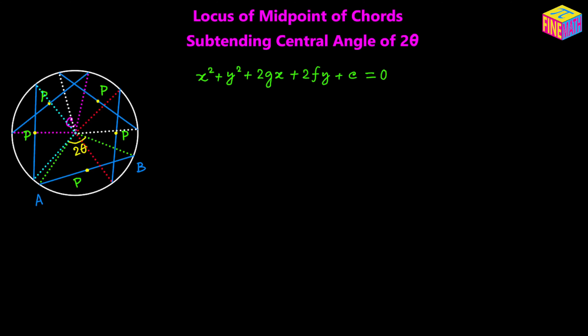We are going to prove this theoretically, and here I will show you a sample where you will realize that the locus of the midpoint of this chord is going to look like a circle — the yellow dotted circle that I have drawn. No matter where you position the chord, as long as it subtends a central angle of 2 theta, its locus is a circle whose center coincides with the center of the original circle.